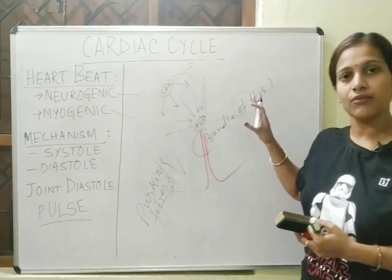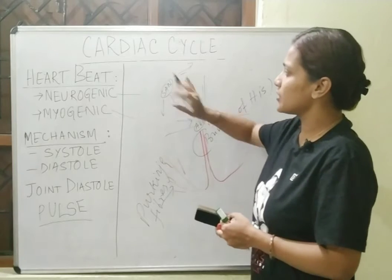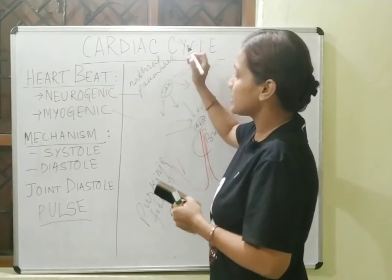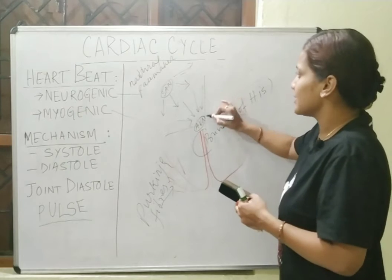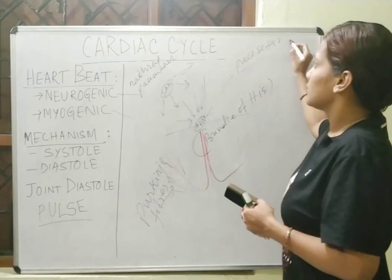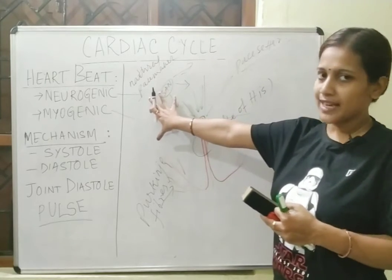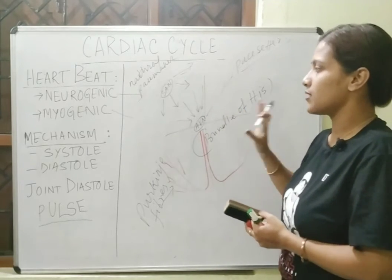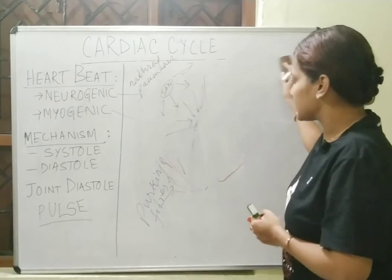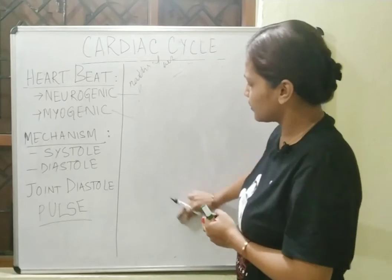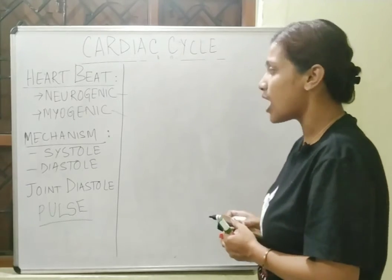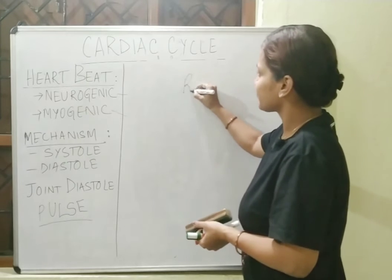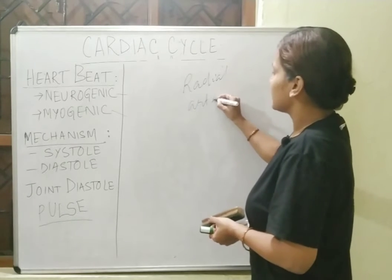The Bundle of His and Purkinje fibers help in transmission of impulses to the entire ventricular muscular walls. That is why we call the sinoatrial node the natural pacemaker — it maintains the rhythmicity of the heartbeat. The AV node is called the pace setter; it picks up signals from the SA node and transmits them to the walls of the ventricles. Pulse is similar in count to heartbeat, and is determined by placing fingertips on the radial artery present in the wrist.